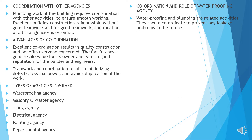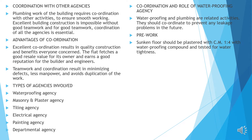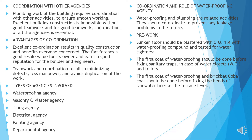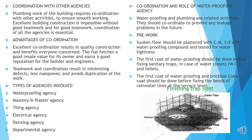Coordination and role of waterproofing agency. Waterproofing and plumbing are related activities; they should coordinate to prevent any leakage problems in the future. Pre-work: sunken floor should be plastered with cement mortar 1:4 with waterproofing compound and tested for water tightness. The first coat of waterproofing should be done before fixing sanitary traps in case of water closets and toilets. The first coat of waterproofing and brick bed copper coat should be done before fixing the bends of the rainwater pipe at the terrace level. Finishing the trap joint — how to finish the tiny trap joint is shown in detail.